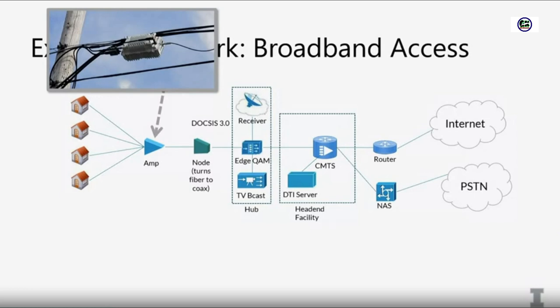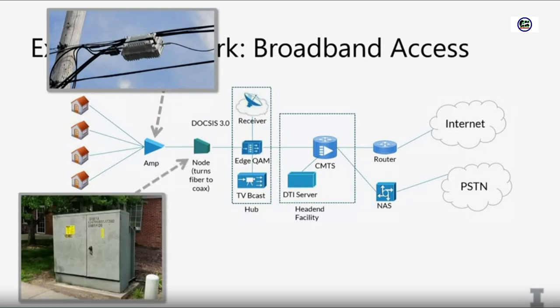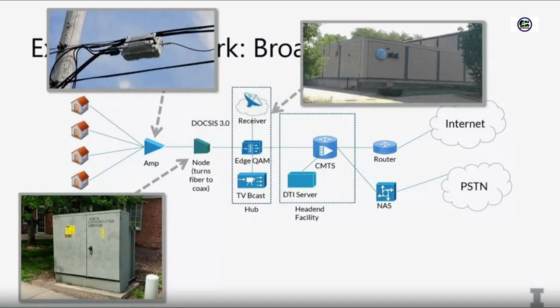The amplifier takes that information and sends it up to an upstream node. What the node does is aggregation — it takes all of these individual coaxial cable or wired connections and turns them into fiber. So a lot of connections come in and very few connections come out. Then it goes up to a hub.